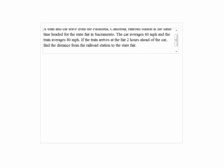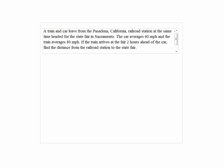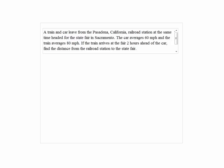A train and car leave from Pasadena, California Railroad Station at the same time, headed for the State Fair in Sacramento. The car can drive 60 miles per hour and the train averages 80 miles per hour. If the train arrives at the fair two hours ahead of the car, find the distance from the Railroad Station to the State Fair.